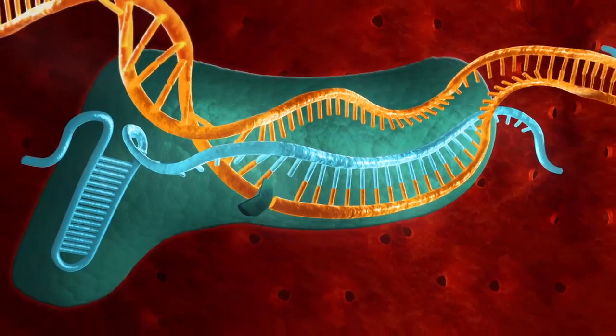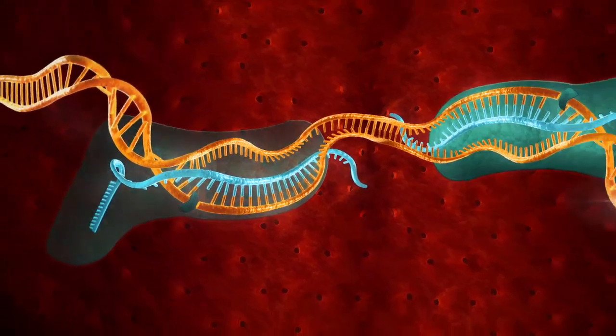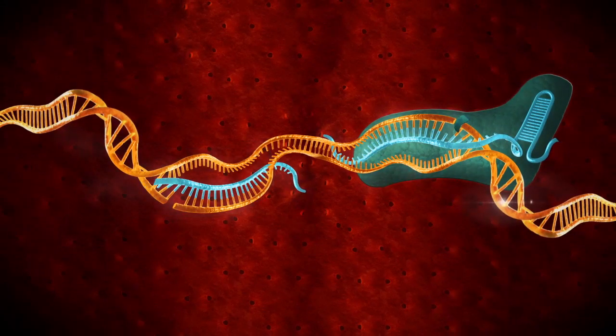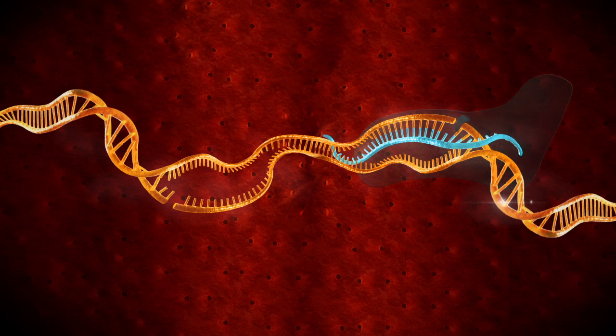By using the Nickase form of Cas9 with two guide RNAs targeting opposite strands of the target DNA, a double strand break is achieved with reduced off-target activity.